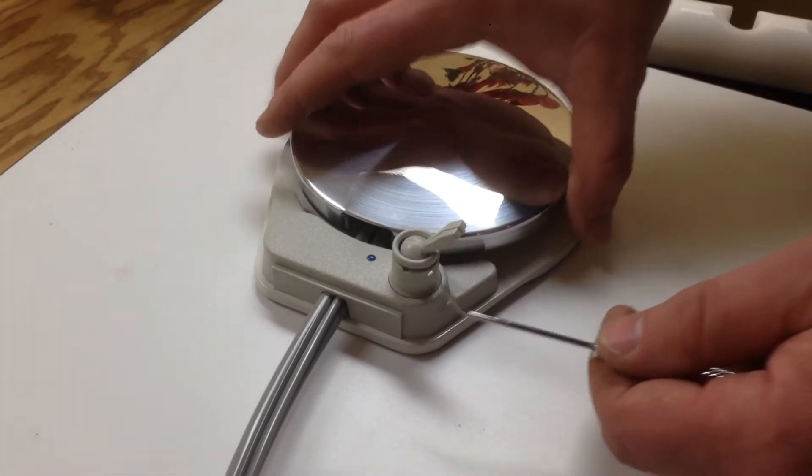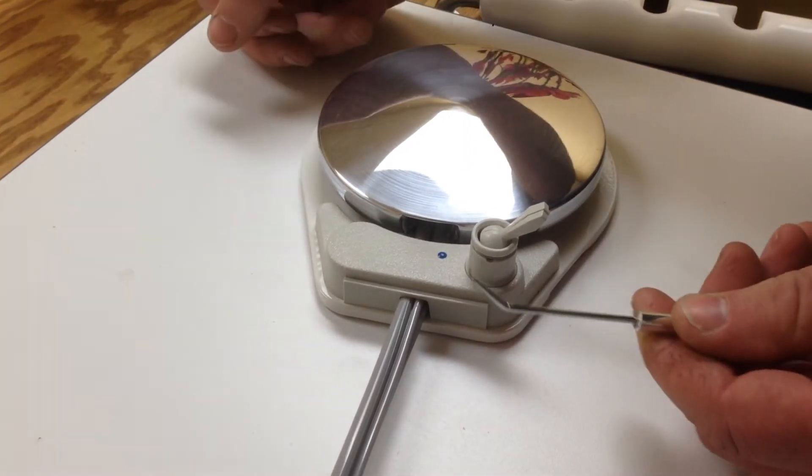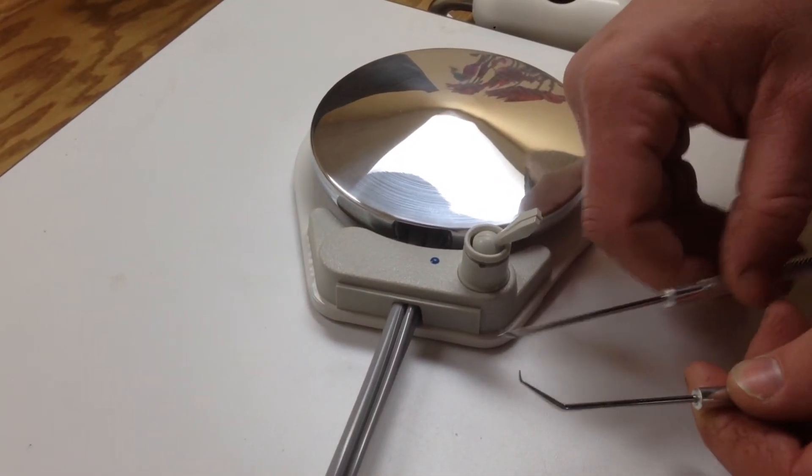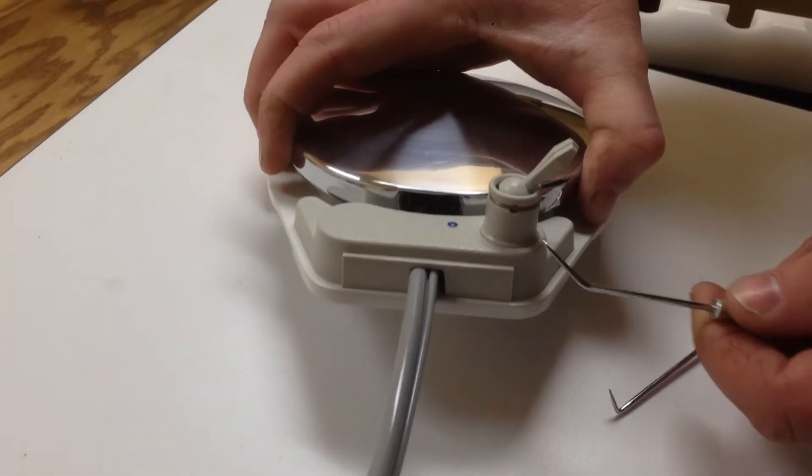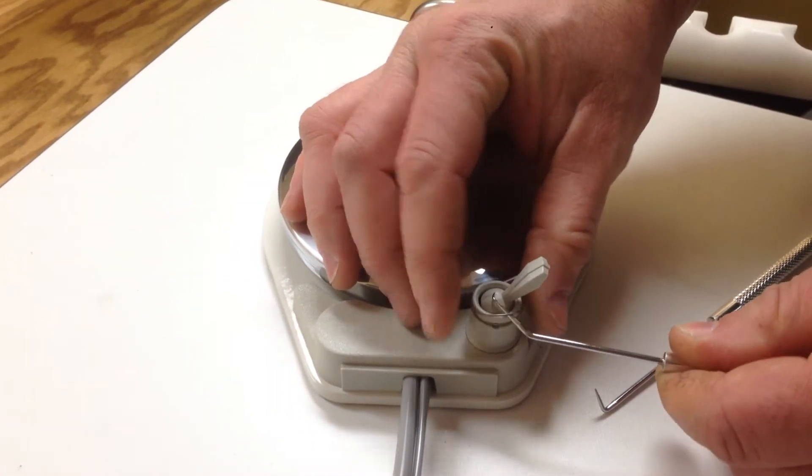Today we're going to change out this toggle in this foot control. Take an explorer or a pick of some sort. First thing we do is get in underneath this and pop it off like so.